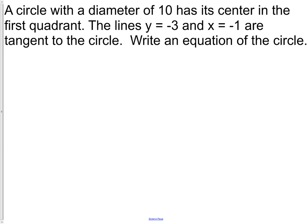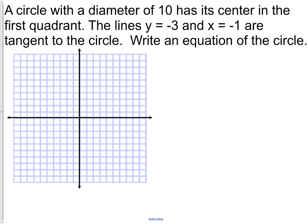Here's another question. A circle with a diameter of 10 has its center in the first quadrant. The lines y equals negative 3 and x equals negative 1 are tangent to the circle. Write an equation for the circle. This may seem pretty difficult, but using graph paper, actually this is a pretty straightforward question. So let's start to put some of this information on the picture. A circle with a diameter 10, which means it has a radius of 5. So we know we have a radius of 5. And we have two lines y equals negative 3 and x equals negative 1.